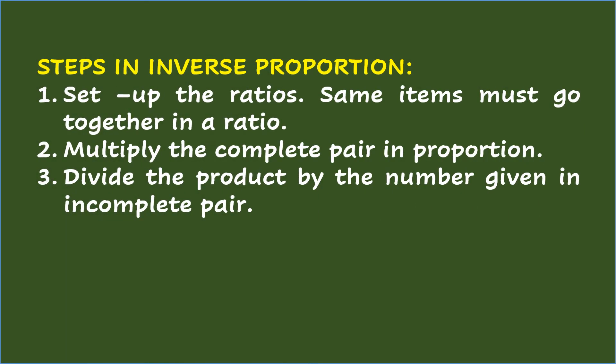Steps in inverse proportion: Number 1 — set up the ratios; same items must go together in a ratio. Number 2 — multiply the complete pair in proportion. Number 3 — divide the product by the number given in the incomplete pair.